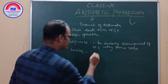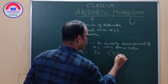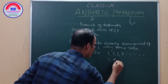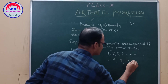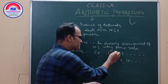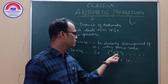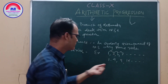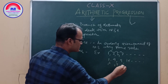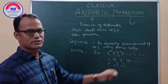Let's take some examples. You can write 1, 3, 5, 7. Otherwise, you can write 1, 4, 9, 16. Here the difference follows some rule. You see, this is 1 squared, this is 2 squared, 3 squared — so these are called sequences.